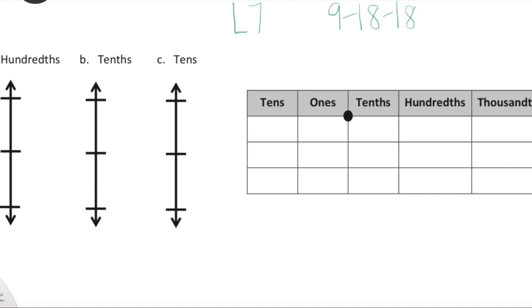We are going to be rounding numbers across a few different place values. First we're going to look at 3.13 — that's three and one tenth, zero hundredths. I'm going to label that as 3.1. We're going to use these vertical number lines and round 3.1 to the nearest hundredth, then to the nearest tenth, and then to the nearest ten. I'm going to show you how to set up this first one. We're working with 3.1, so at the very bottom the low side is going to be 3.10, or three and ten hundredths.